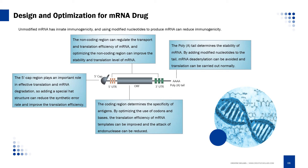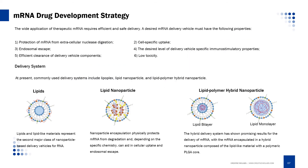The poly-A tail determines the stability of mRNA. By adding modified nucleotides to the tail, mRNA deadenylation can be avoided and translation can be carried out normally. When we have a properly designed mRNA drug, we need to choose a suitable delivery system to deliver the drug to the cell.